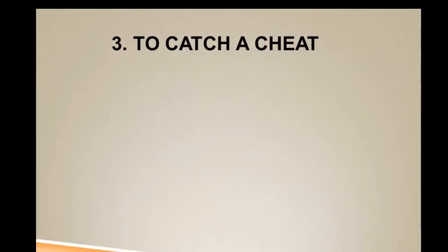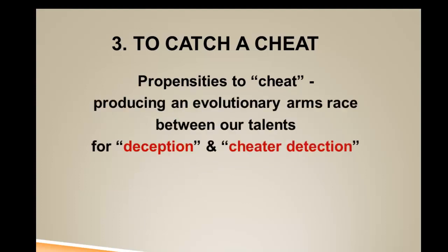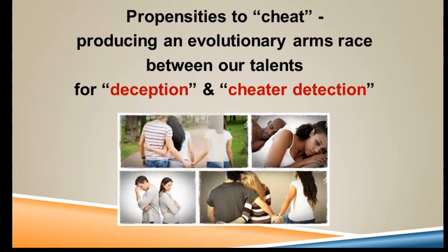A third thing Trivers pointed to is that we should have mental modules or cognitive abilities to catch a cheat — we should be constantly scanning the horizon for people who are deceiving us. There's an even greater payoff if somebody doesn't reciprocate. He suggested this would produce an arms race in terms of selection between our talents for deceiving one another and our talents for detecting cheating. This does indeed seem to be a big part of human life — we're constantly evaluating relationships, especially close ones, for signs of deception.